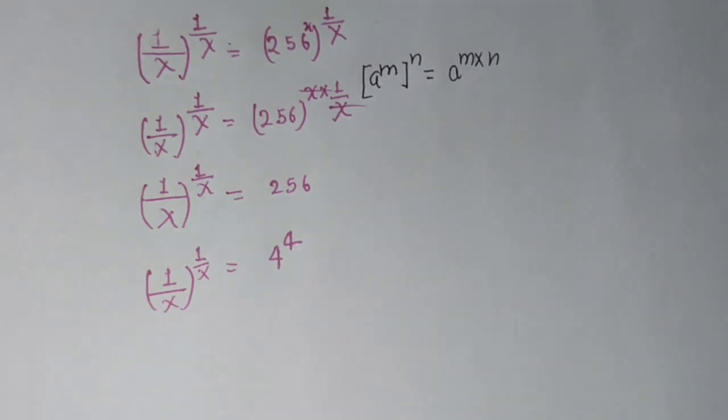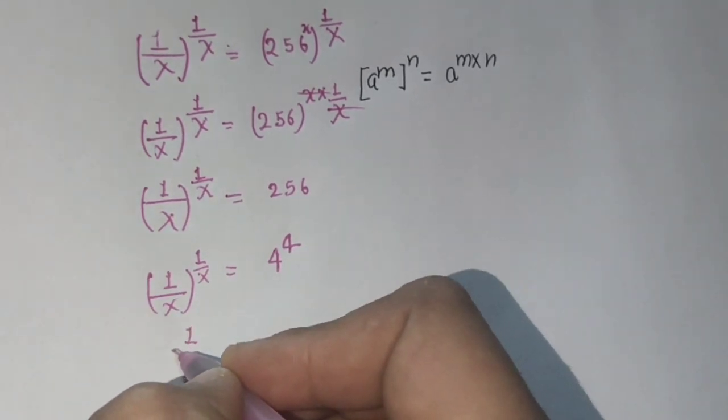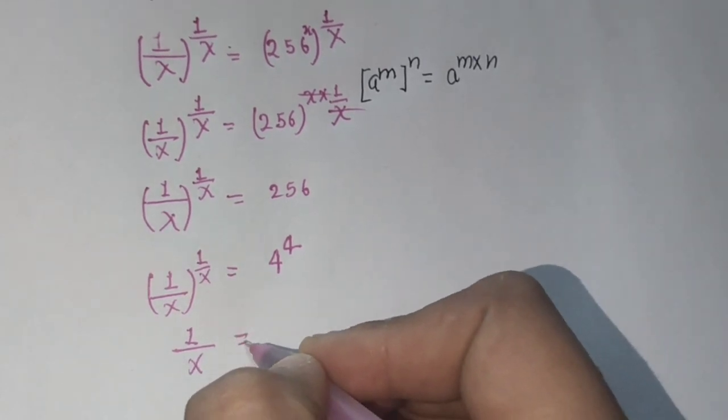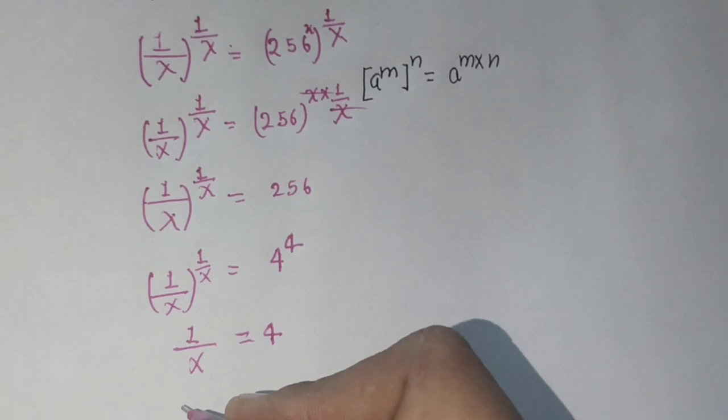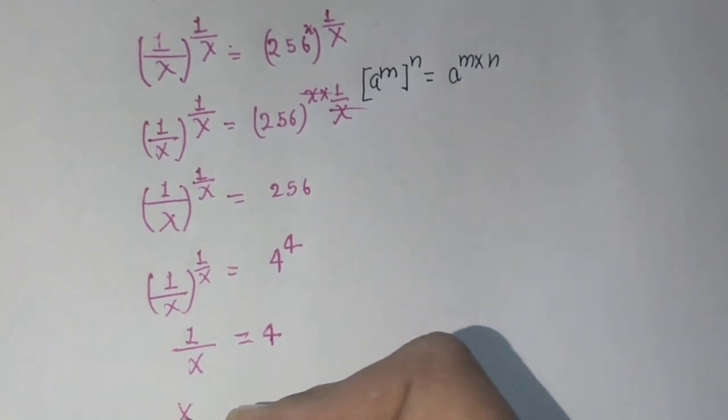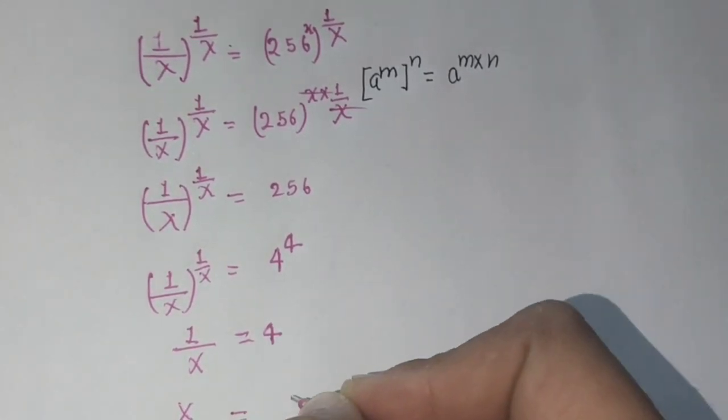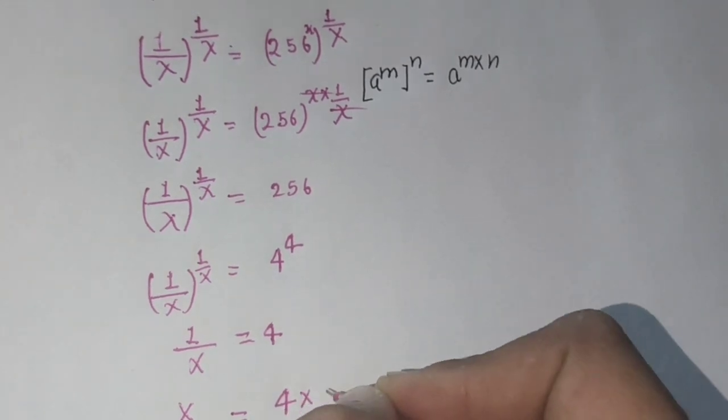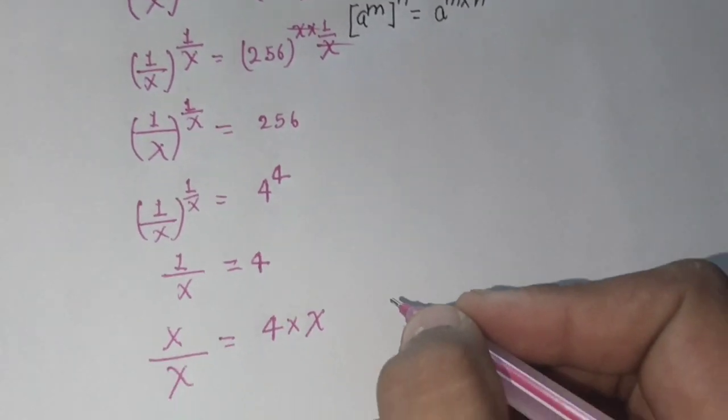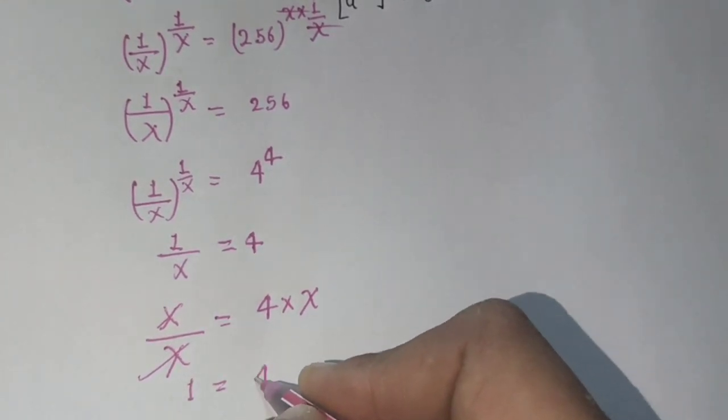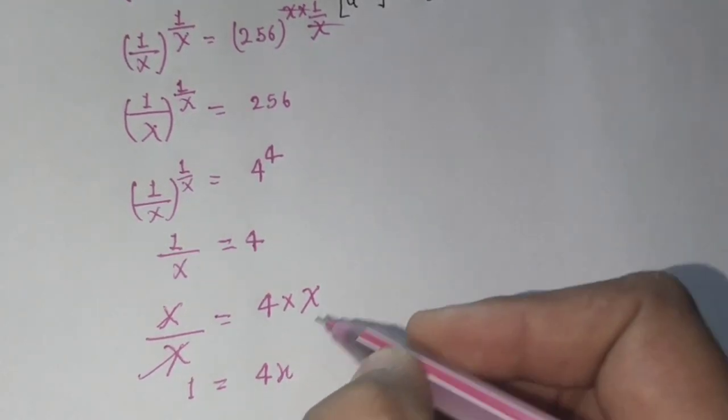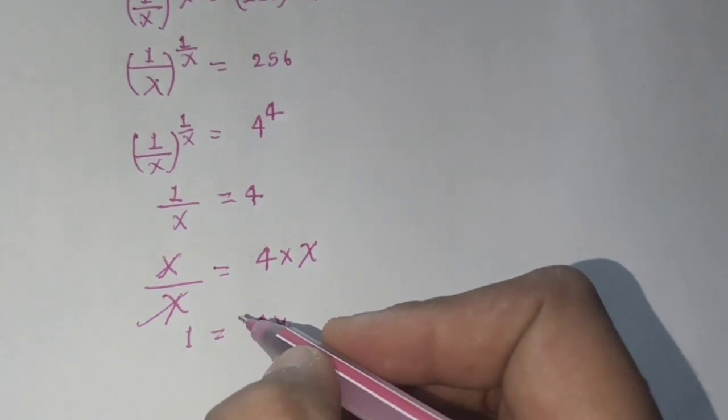So 1 upon x equals 4. Both sides multiply x - this cancels. 1 equals 4x. Both sides divide 4.